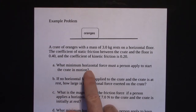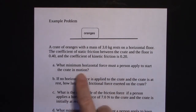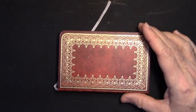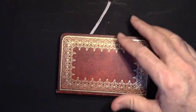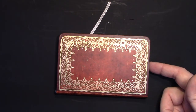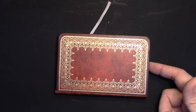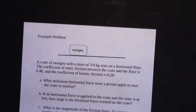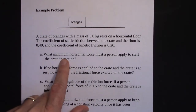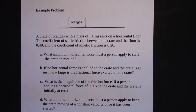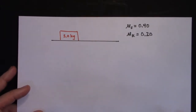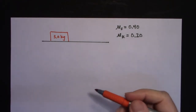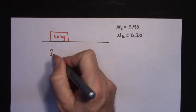Part one asks: what minimum horizontal force must a person apply to start the crate in motion? Using this book as a prop — if I push a little it doesn't move, a little more and it still doesn't move, but eventually it starts to move. The question is asking for the minimum force needed to start that motion. I'll first calculate the maximum force of static friction: F-s-max equals mu-s times the normal force.